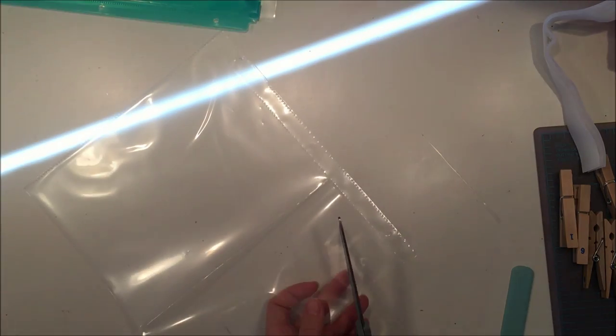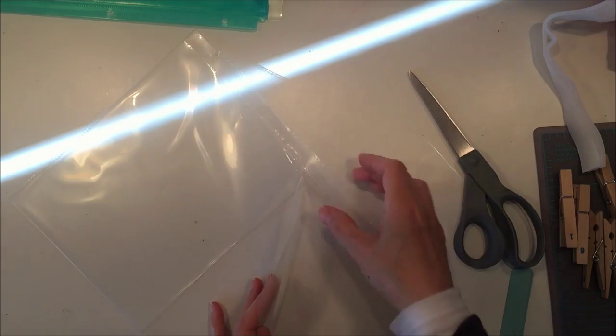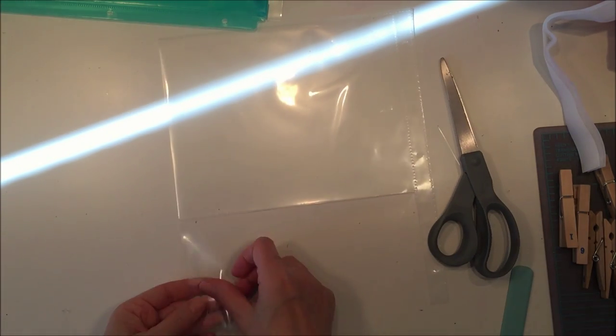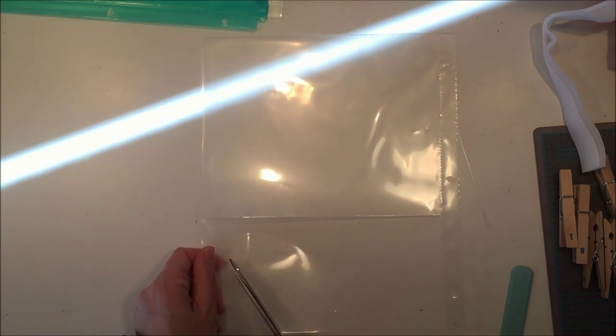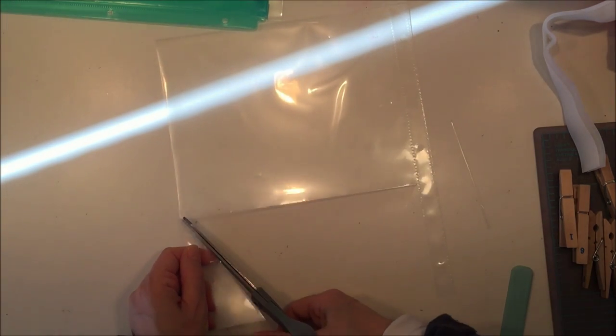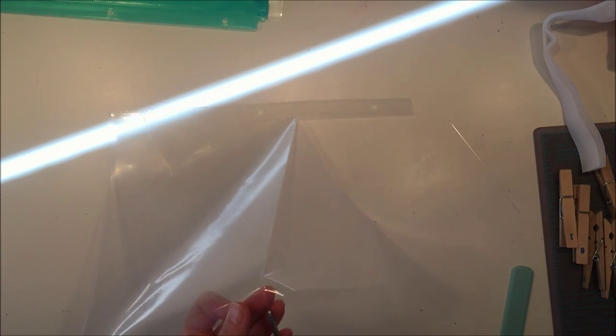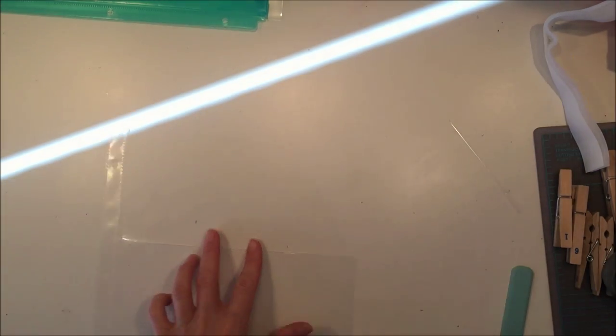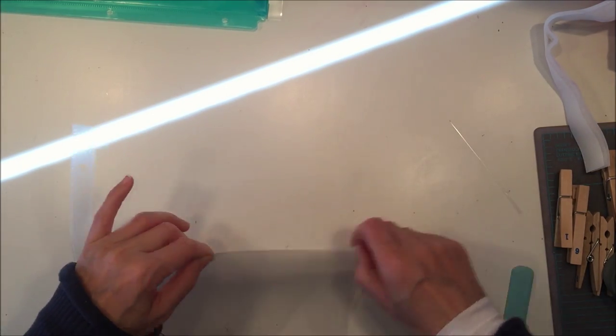Then you want to start by cutting the right side just a little triangle piece out so that we can make like an envelope flap. You want to start with the right side first so that you can take that little piece, put it on the left side, and use it as a template to cut the other piece out.